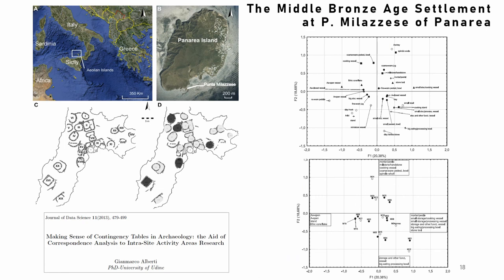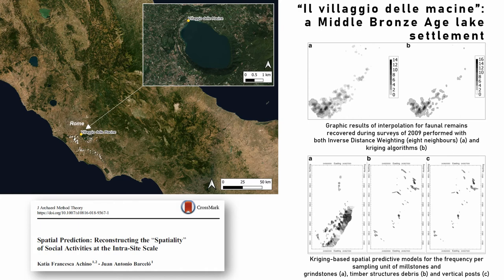For the settlement of Punta Milazzese on Panarea Island, Gianmarco Alberti has used a different methodological approach based on statistical analysis but without GIS elaboration. Principal Component Analysis has been used to explore the relation between hearths and functional classes of objects. This approach has been possible due to a physical division of space, represented by the hearths used as spatial units. A further example is the Middle Bronze Age settlement of Villaggio delle Macine, located on the shore of Albano Lake in central Italy. In this case, a series of combined geostatistical analyses has been adopted, specifically created with the aim to obtain predictive models that use faunal remains considered as a viable proxy for the spatial distribution of refuse.